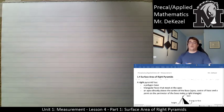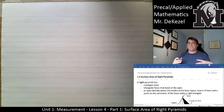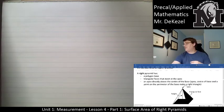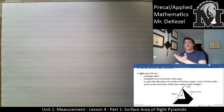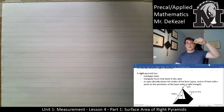This is 1.4: Surface Area of Right Pyramids. These are some common features of a right pyramid: it has a polygon base, meaning its base is a defined shape like a triangle, square, pentagon, or hexagon. It has triangular faces that meet at the apex — the top point. Each of the sides is known as a face, and if you add up all the faces that's called the lateral area.